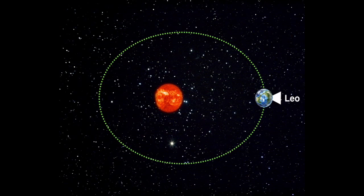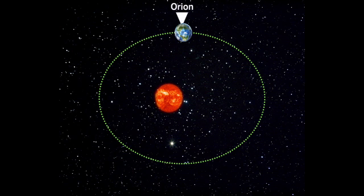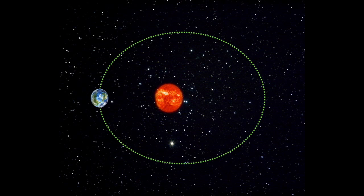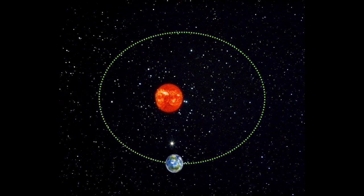That's because the Earth is revolving around the Sun, and we are in different places out in space. To give a slightly different interpretation, let's take a look at the Earth here in its orbit around the Sun. Right now, if I was on the Earth, the part facing away from the Sun would be nighttime, because the Sun's only shining on one half of the Earth. And the constellation I'm able to see in this position is the constellation Leo — Leo the Lion.